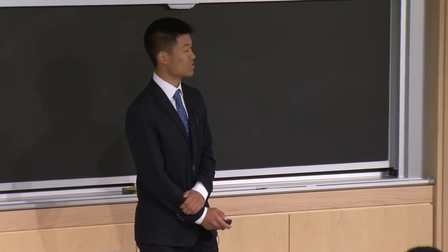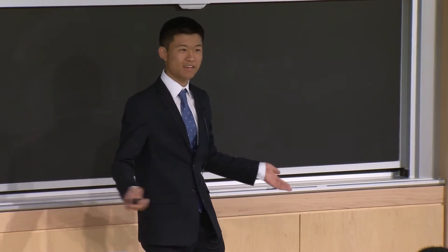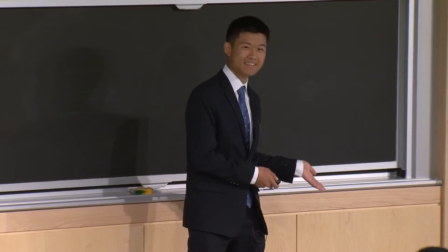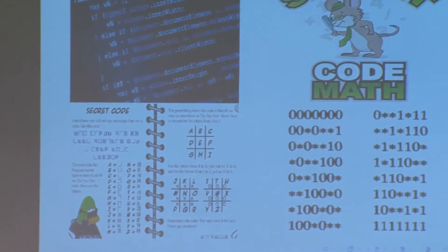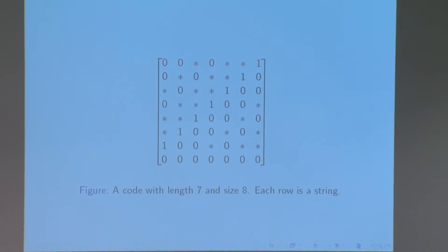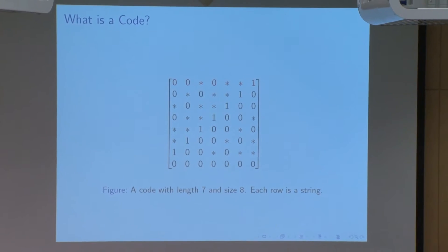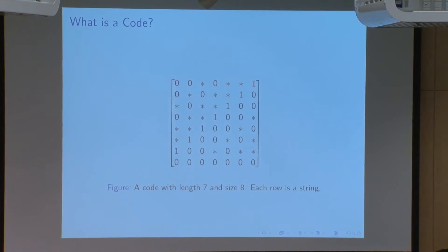So let's start with some background and terminology. A code in this context refers to a set of strings, where each string has the same length K, and where each string is made up of characters from an alphabet of zeros, ones, and stars. In this example, we've got a code with length seven, so each string has seven characters in it, and size eight. The size of a code refers to how many strings are present in the code.